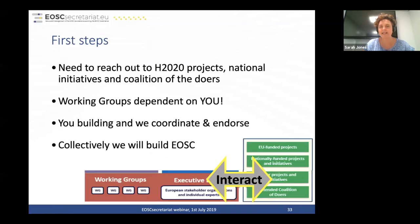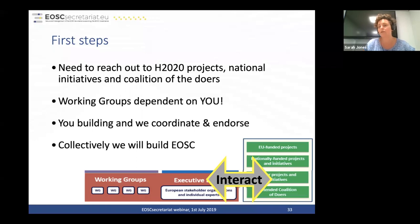An important element in the governance structure is the interaction between governance, the executive board, working groups, and all those building the EOSC — the projects, national initiatives, and the extended coalition of the doers. Working groups need inputs from Horizon 2020 projects and national initiatives, and need to help coordinate and make recommendations to adopt the practices coming out of those efforts. Collectively, the EOSC community will make the EOSC successful.